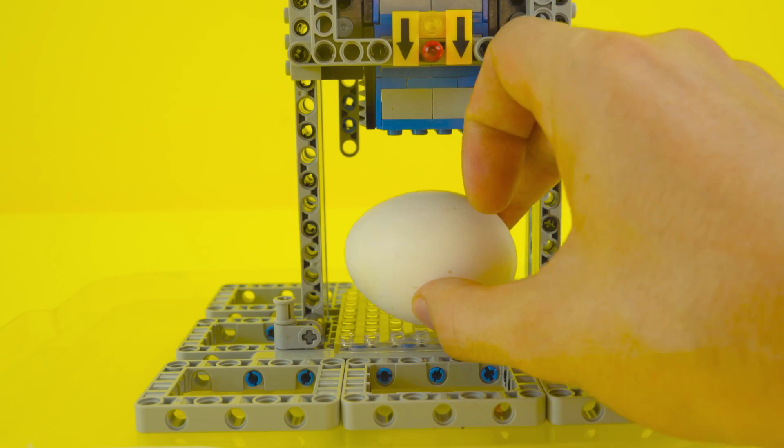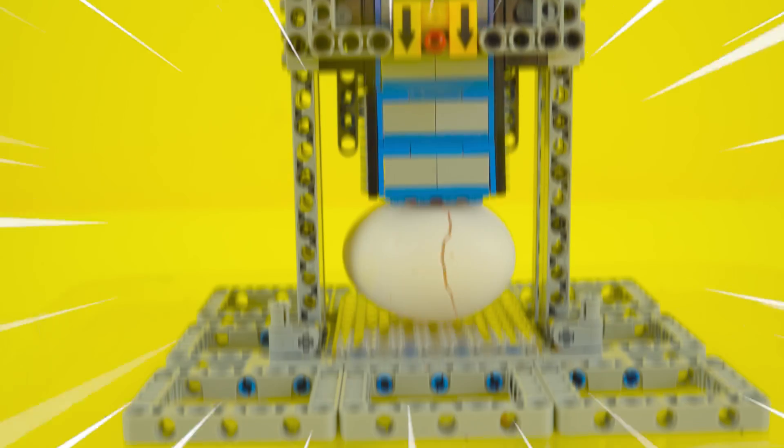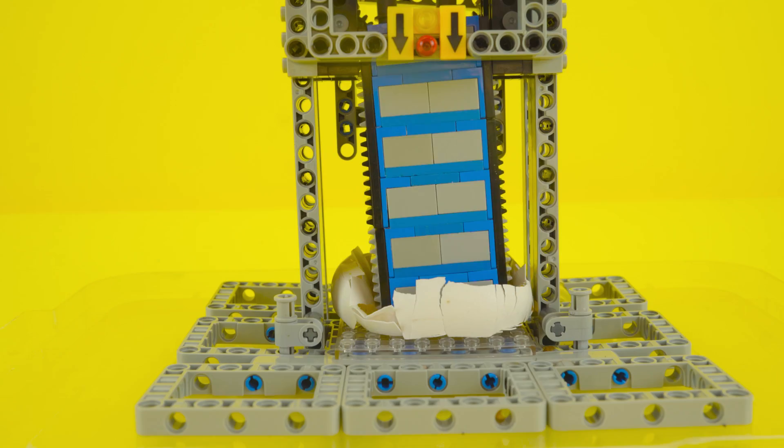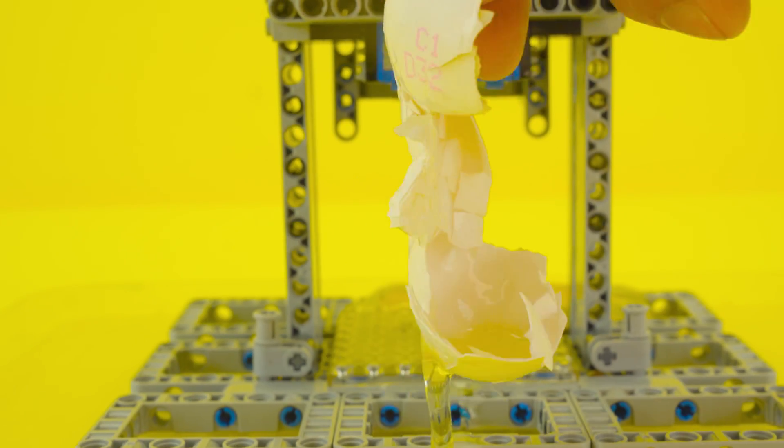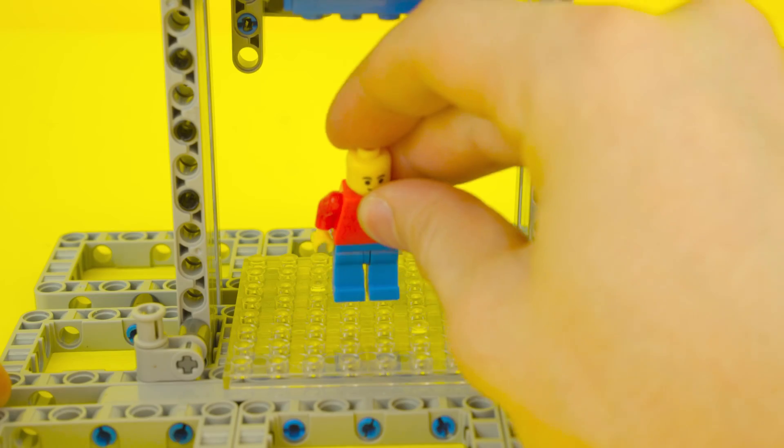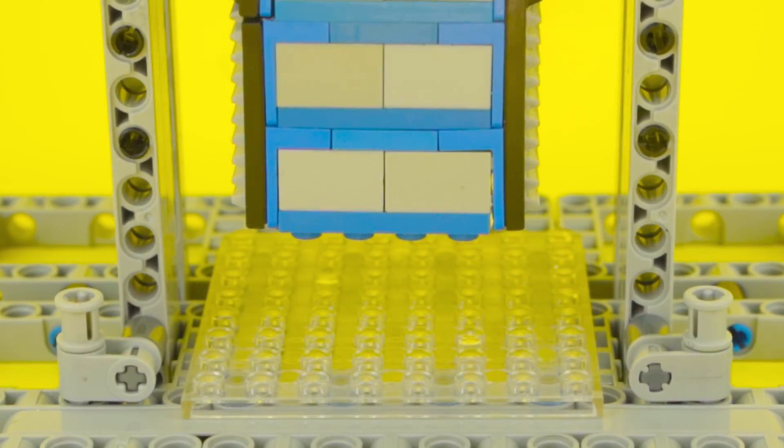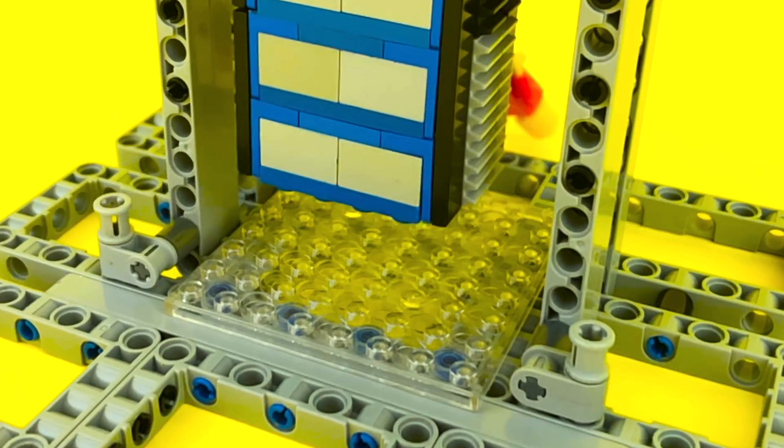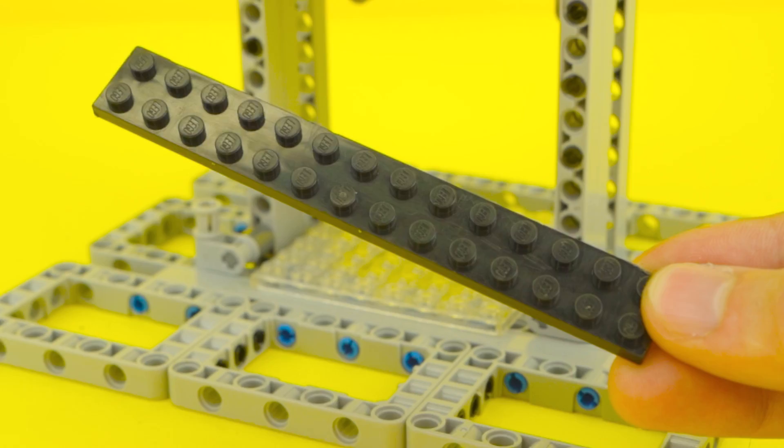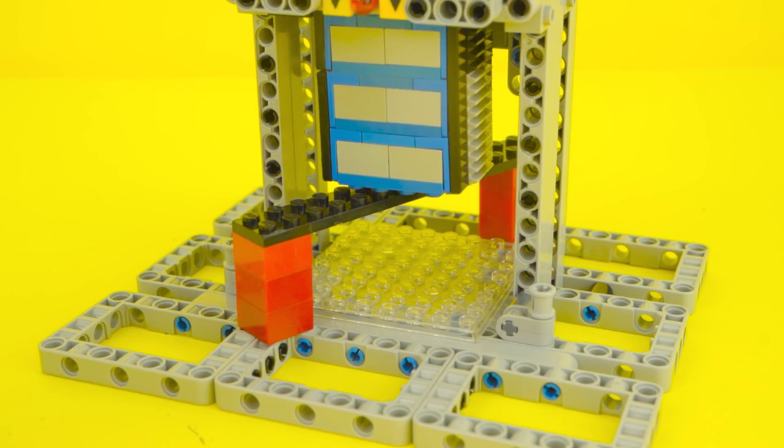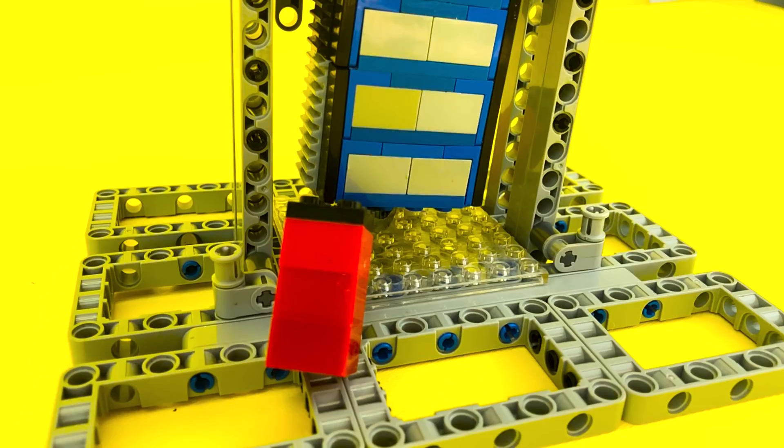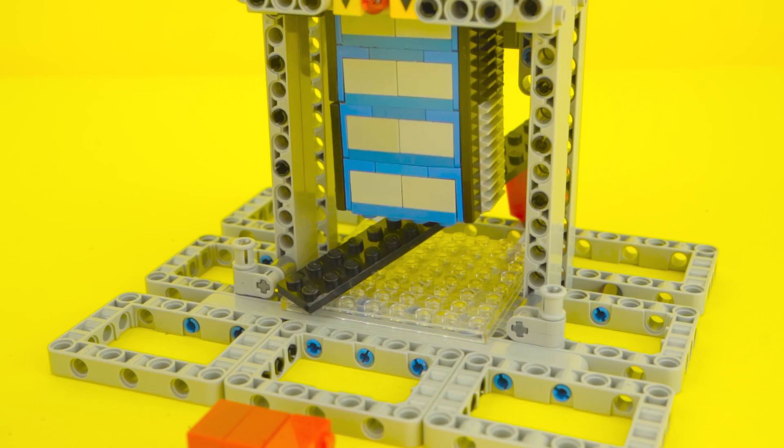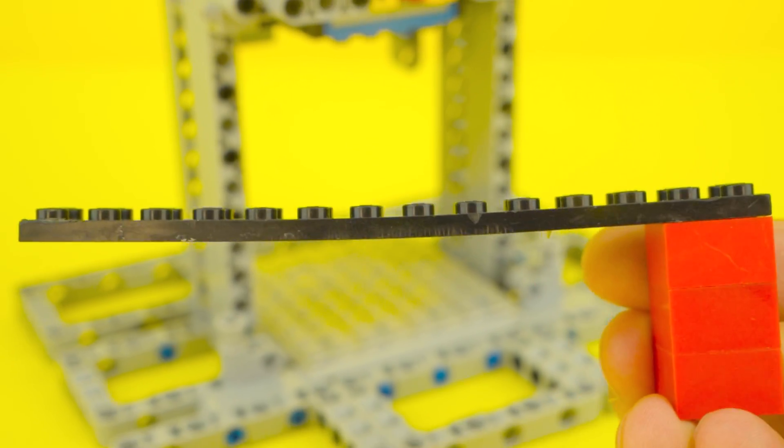Next, we'll crush something more delicate, like eggs. It's messy but fun. After that, we'll see if a Lego minifigure can withstand the press. And finally, we'll test it on a Lego plate. While the plate doesn't break, it does bend impressively.